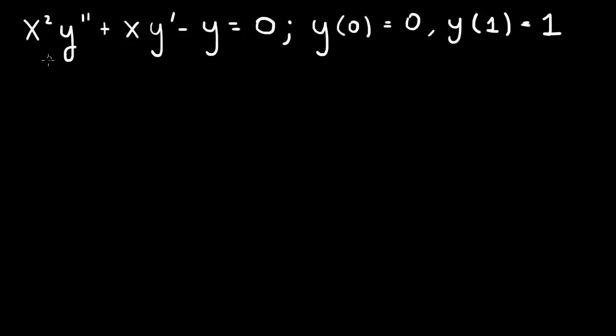This is a Cauchy-Euler equation because the y double prime term is multiplied by x squared, the y prime is multiplied by x, and the y has just a constant here. So because of the nature of this equation,